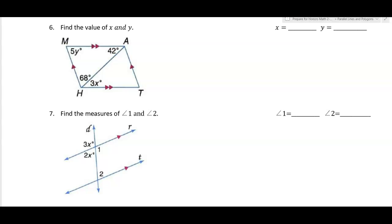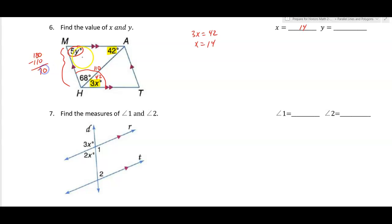These two angles are congruent because they're alternate interior angles, so 3x equals 42, meaning x is 14. For y, this angle is 42 degrees and the whole angle is 68 plus 42, which is 110 degrees. Since these angles are same-side interior, 5y plus 110 equals 180 — 180 minus 110 is 70 — so 5y equals 70, and y is 14.